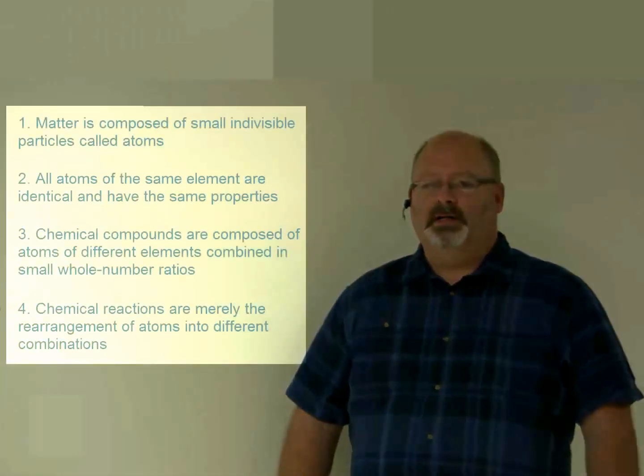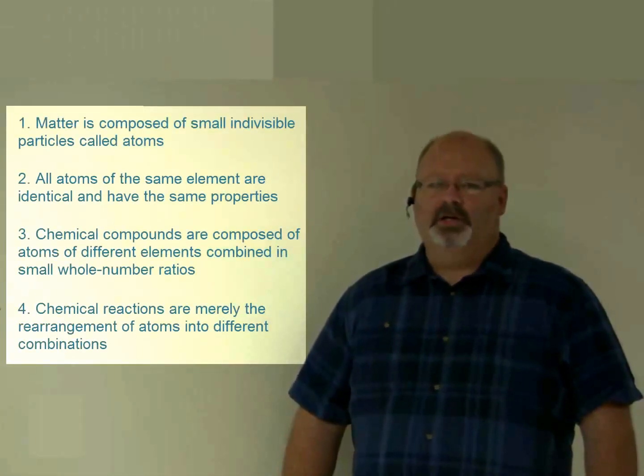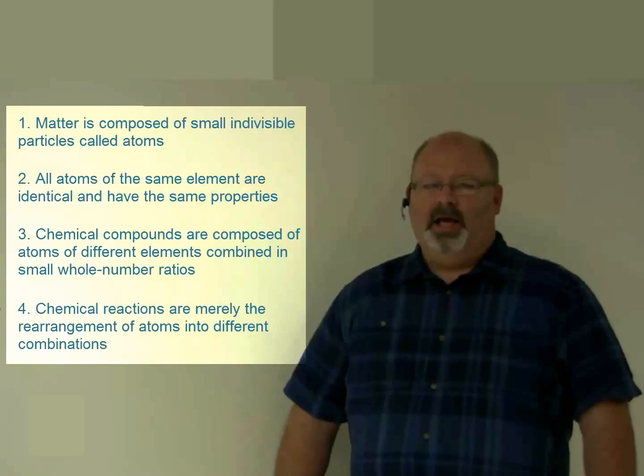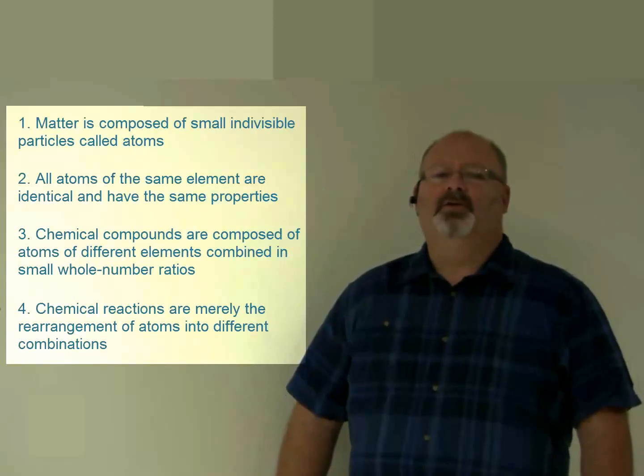Dalton's model of atomic structure consists of four basic assertions or postulates. He asserts these four ideas to be true and then uses the statements to understand and plan experiments where they either work to explain results or they fail. Let's consider these assertions one at a time.